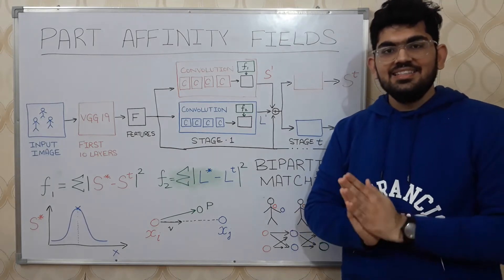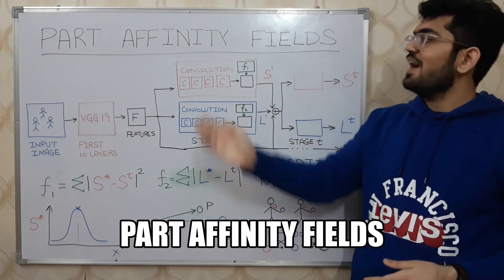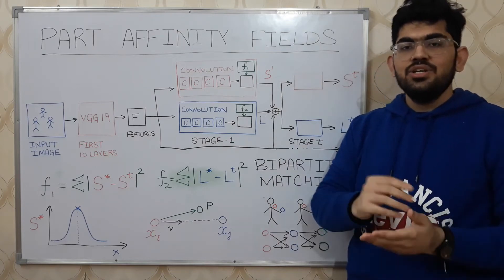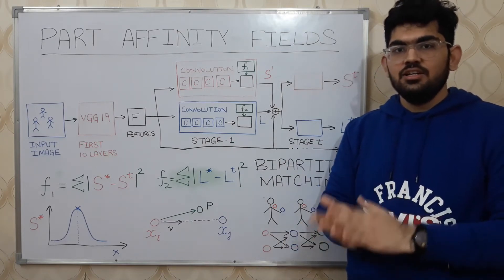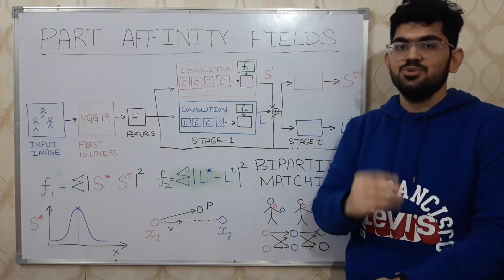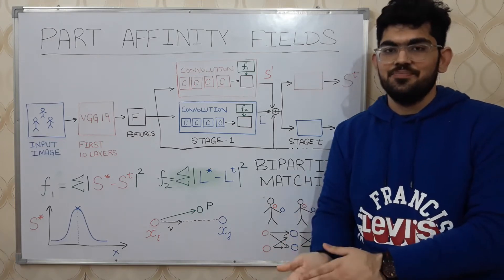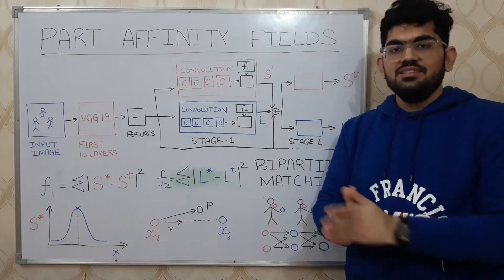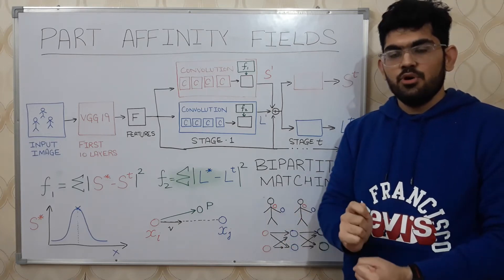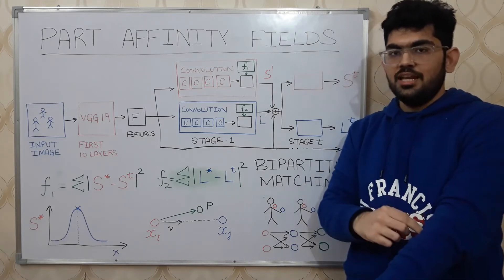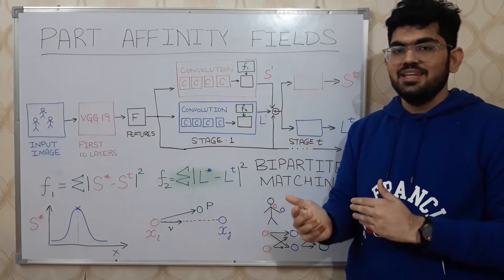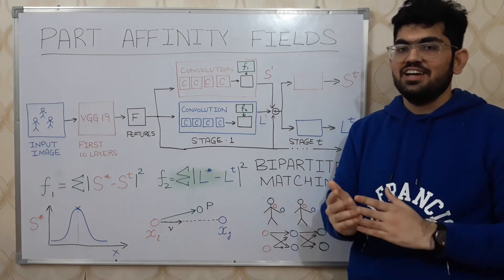L is represented using what we call part affinity fields. Part affinity fields are 2D vector fields that encode the direction pointing from one limb to the other. For instance, in our case, we have a vector field that points from the shoulder to the elbow. In order for the network to learn, we need to define the loss functions.